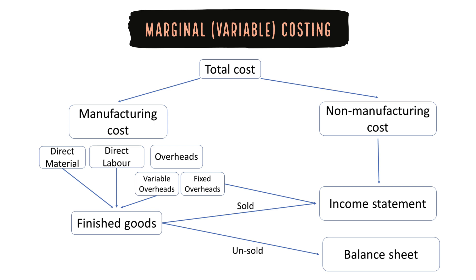All the manufacturing costs are split into material, labor, variable and fixed overheads. Fixed overheads are charged directly to the income statement in the period in which they are incurred. They do not form part of the product costs.